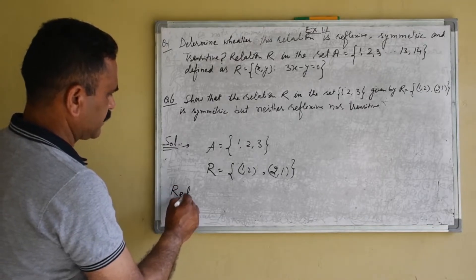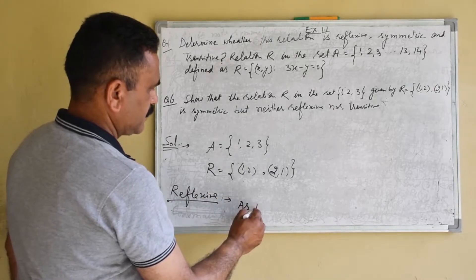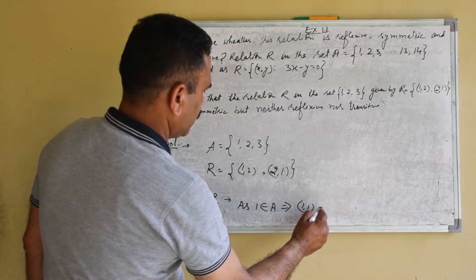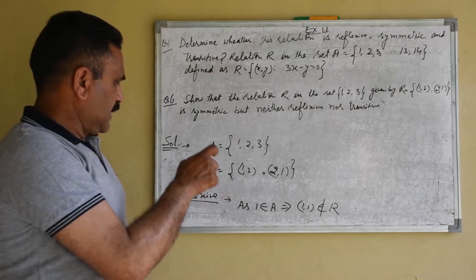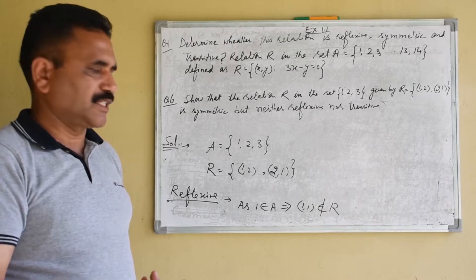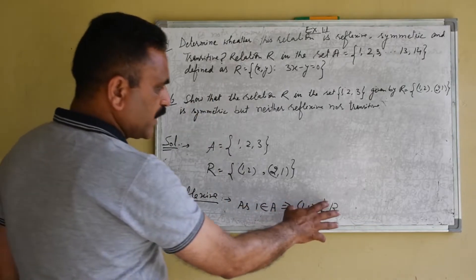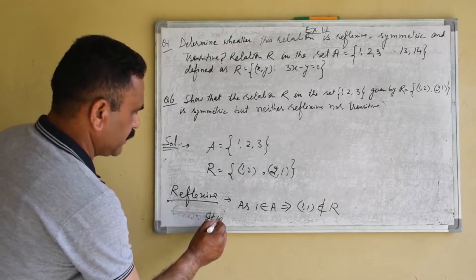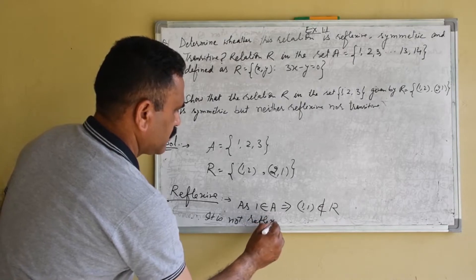We will check whether this is reflexive or not. Since 1 belongs to A, this implies (1, 1) does not belong to R. We know a relation is reflexive if every element A is the image of itself. Here, 1 is an element of set A, but (1, 1) does not belong to R. Therefore, it is not reflexive.